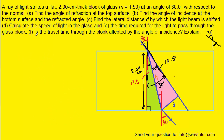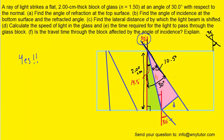Finally, for part F — is the travel time through the block affected by the angle of incidence? The answer is yes. As we change that 30 degree angle to some other value, that will change the angle of refraction. If the angle of refraction changes, then the distance H also changes. For example, if the angle of refraction were smaller, H would be shorter; if greater, H would be larger. Since these distances are different, the time required to travel them will also be different. So the correct answer for part F is yes.